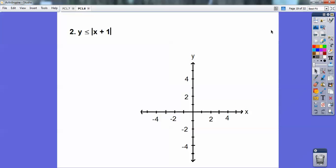This is a V. My V starts to the left at 1, and it's going up. So it's going that way like that. And it's a solid V because it has an equals bar right there.